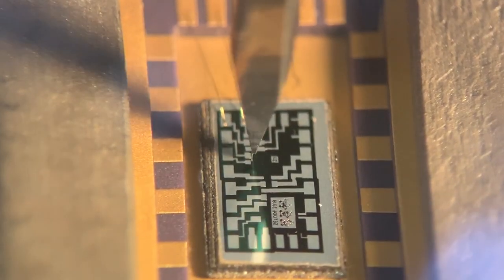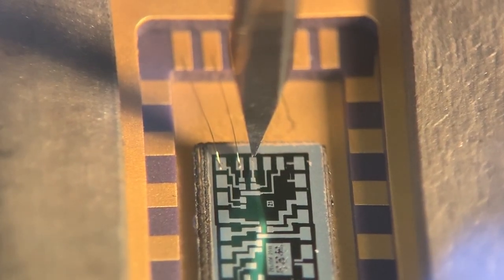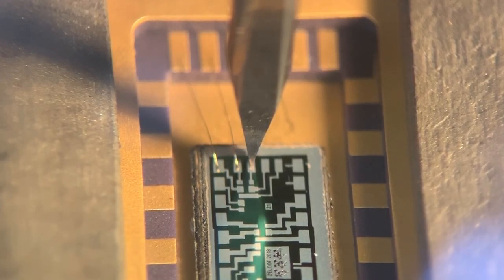My approach to getting this right was kind of a strategic trial and error until the bonds were one, reliable, and two, look like other bonds. So this is a chip I decapped and put in the electron microscope so I could see exactly what the bonds were supposed to look like. This is another view of a bond going a little bit slower than the one we just did, so you can see exactly what's going on and the settings are pretty well optimized here for a nice bond.